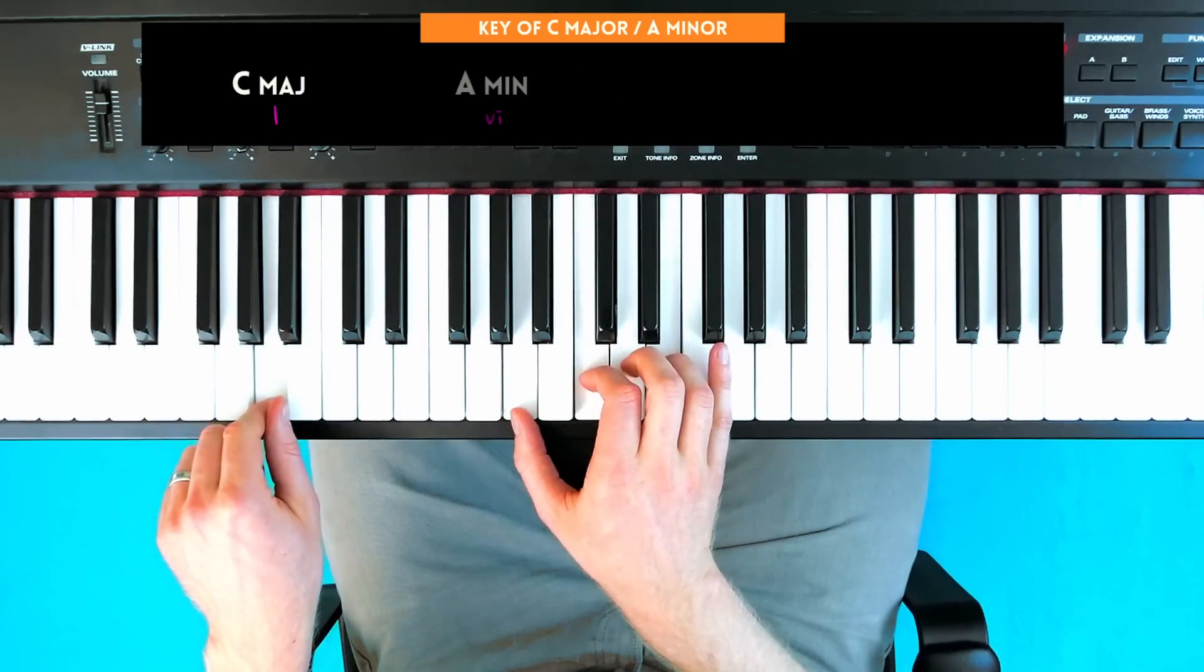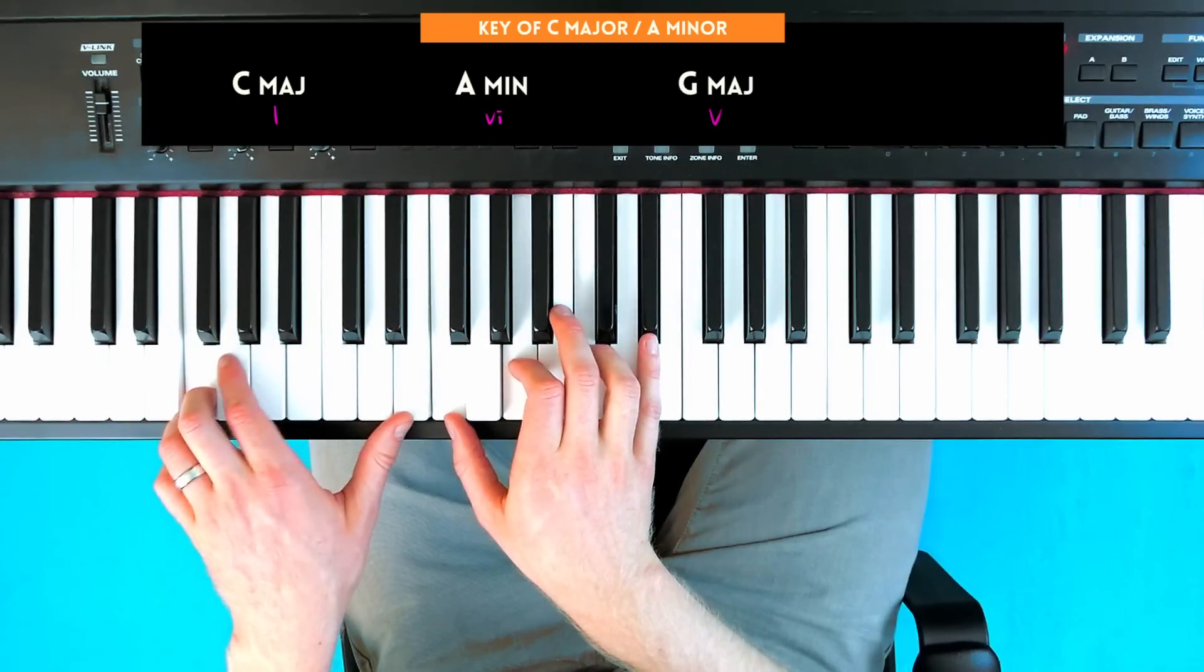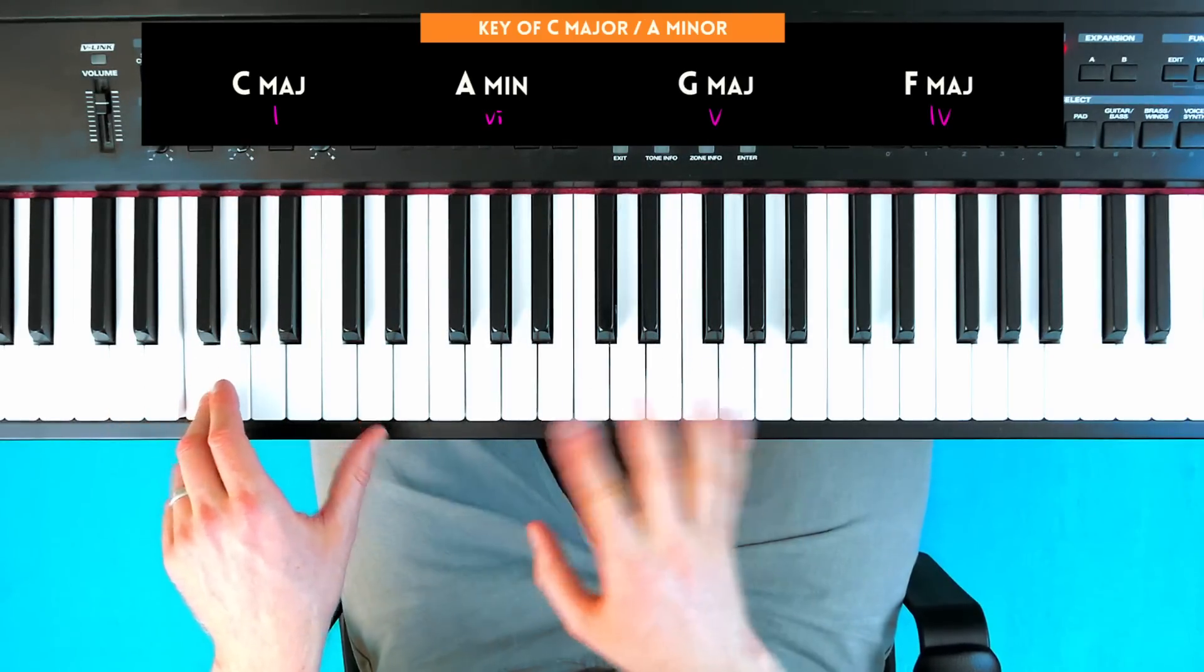These four pop chords are C major, A minor, G major, and F major. A lot of pop music is written from these chords.